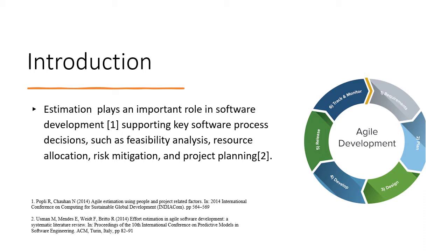There are challenges in estimation, such as requirements constantly changing during the project, which results in inaccuracy in estimation. Also, it is hard to estimate unknown parts in the development process, which has also driven the movements of #NoEstimates and #NoProject. Both movements are related: NoEstimates removes the justification of estimation and helps organizations focus on value delivery first, whereas NoProject is an agile approach towards continuous and market-validated value delivery.